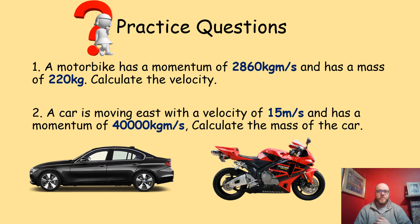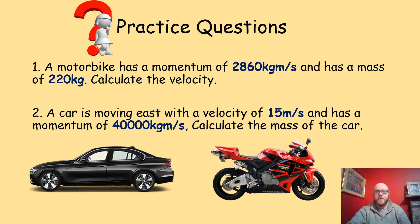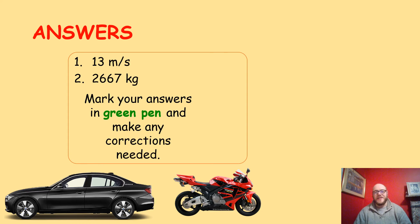Here are another couple of practice questions. A motorbike has a momentum of 2,860 kg m/s and a mass of 220 kilograms — what's its velocity? A car moving east at 15 meters per second has a momentum of 40,000 kg m/s — calculate the mass of the car. Welcome back. The motorbike is traveling at 13 meters per second, which is just under 30 miles an hour. The car has a mass of 2,667 kilograms.